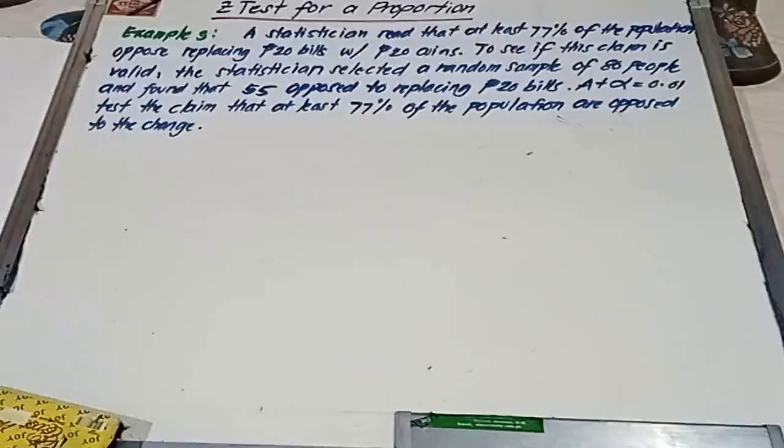It says, a statistician read that at least 77% of the population oppose replacing 20 peso bills with 20 peso coins. To see if this claim is valid, the statistician selected a random sample of 80 people and found that 55 opposed to replacing 20 peso bills. At alpha equals 0.01, test the claim that at least 77% of the population are opposed to the change.